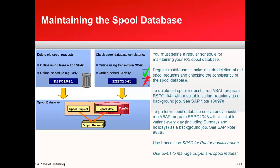Next is maintaining the spool database. The spool keeps growing as you print hundreds and thousands of pages, so you need a mechanism to clear older outdated spools. There is a program called RSPO1041 which you can run using SE38 to define how many days of old spool you want to delete — it basically deletes old spool requests. There is also a program called RSPO1043 which checks spool data consistency. The two T-codes normally used for spool maintenance are SPAD for printer administration and SP01 for managing output and print requests.